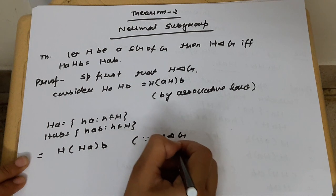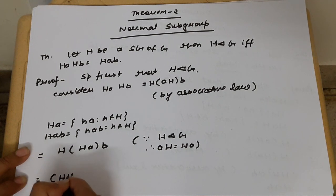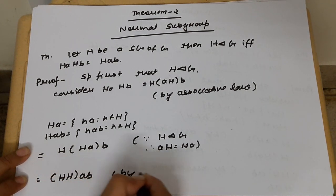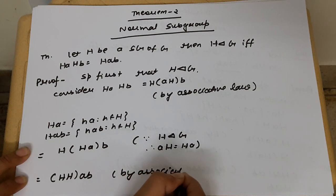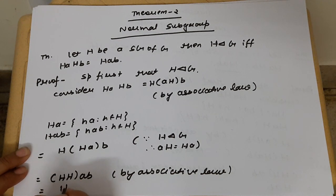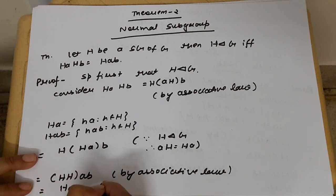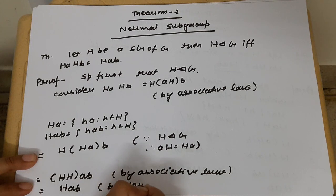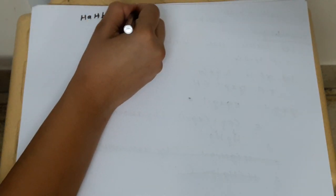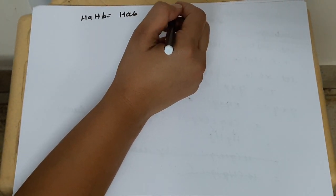Since H is a normal subgroup of G, AH = HA. So we get H·HA·B, which by associative law equals H·HAB. By closure, this gives HA·HB = HAB for all A, B belonging to G, since those A and B were arbitrary.